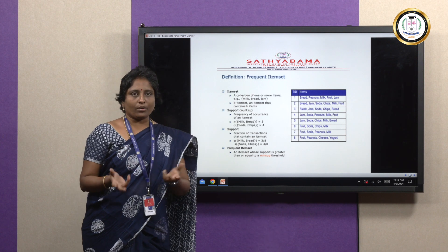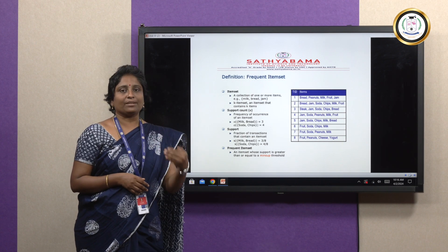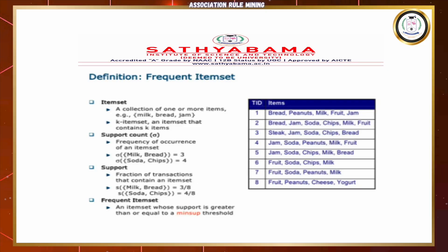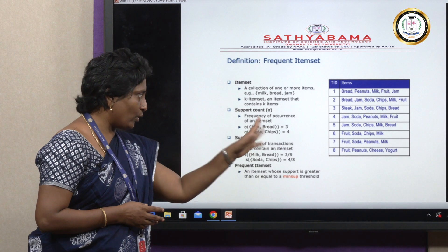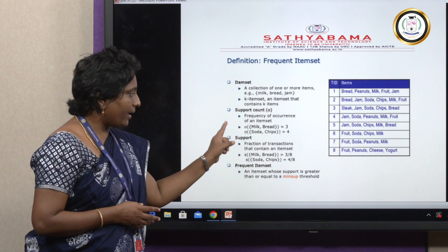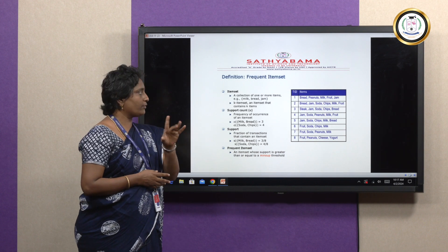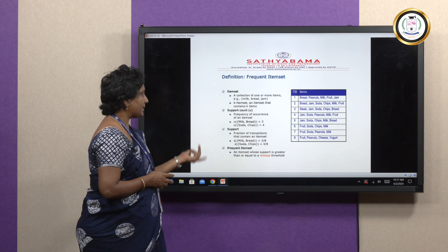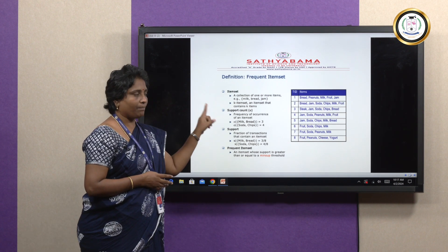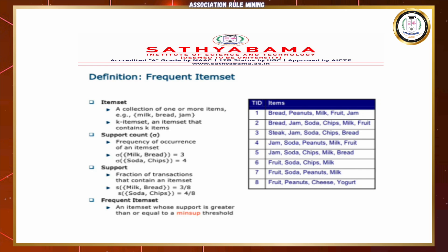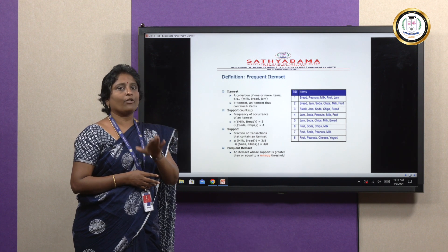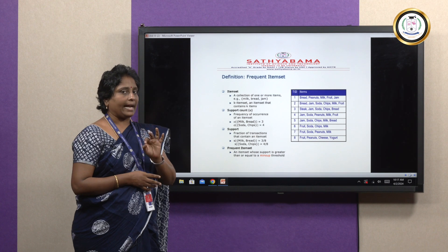Support count is the frequency of occurrence of an item set in a database. For example, if bread is taken as a single unit: in transaction one it appears once, transaction two once, transaction three three times, transaction four not at all, and transaction five four times — so the support count of bread is four. If you search for two items, for example milk and bread: in transaction one there is a presence, transaction two there is a presence, and transaction five there is a presence — so the support count is three. That total count of occurrences is the item support count.